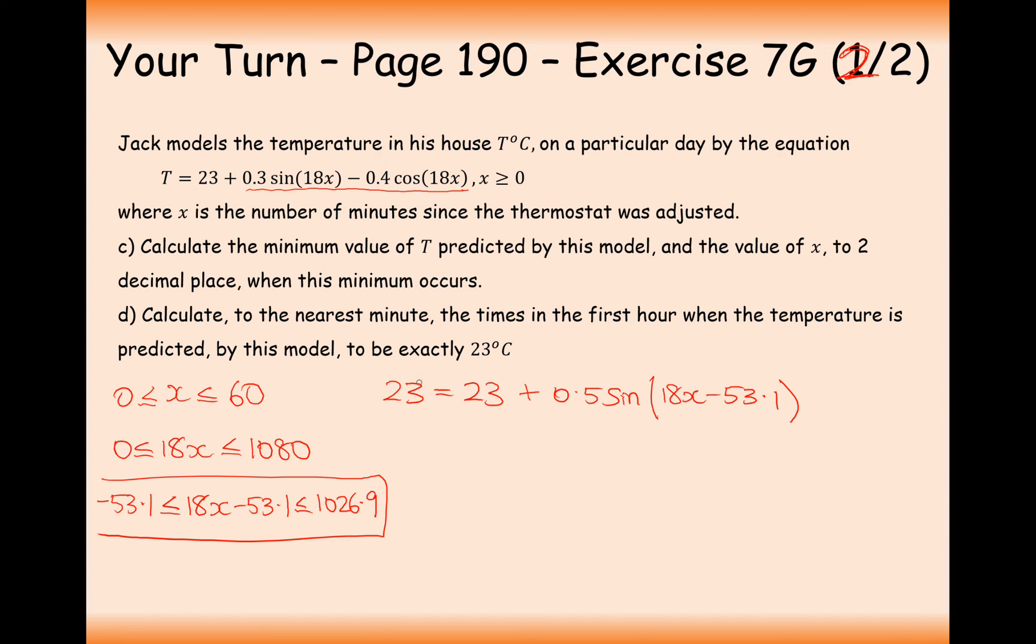Cancel out 23s from both sides, and we get 0. What we're effectively looking for is when this function equals 0. That's going to happen at 0 and effectively every 180 degrees up until this point of 1026.